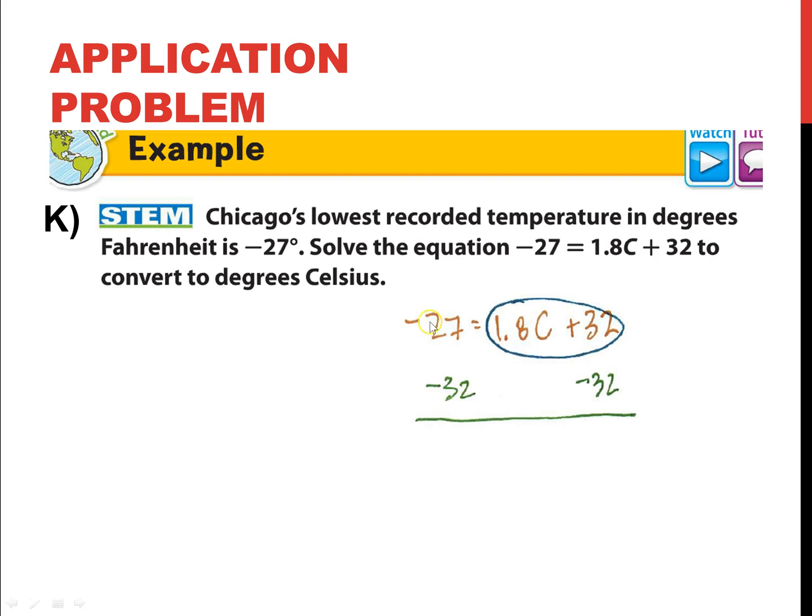These are the same signs. They're both negative. So I add them up. Negative 27 plus 32 is negative 59. Keep this under the larger number. And negative 59 is equal to 1.8 times c, or 1.8c.